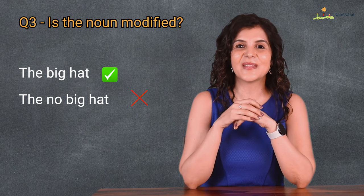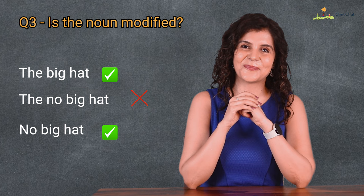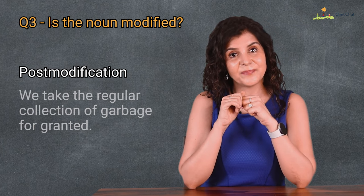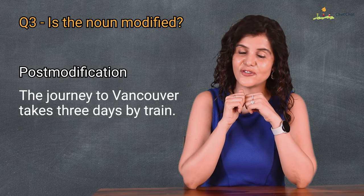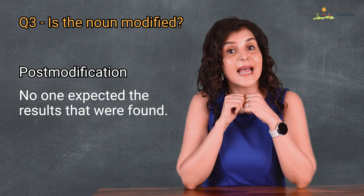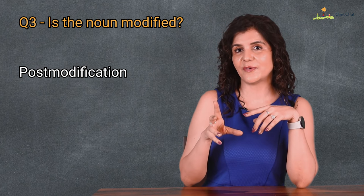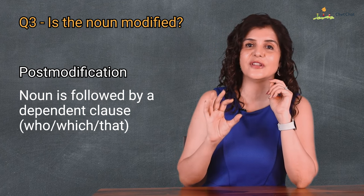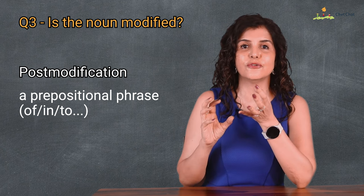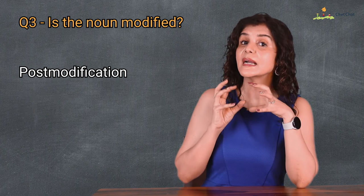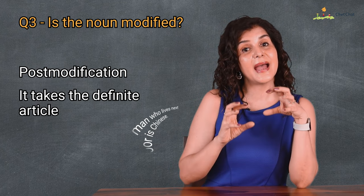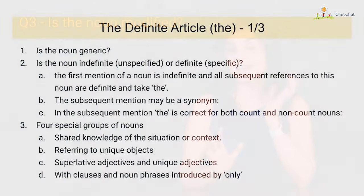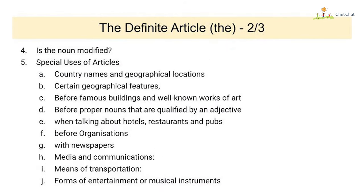For post-modification, look at these sentences: we take the regular collection of garbage for granted; the journey to Vancouver takes three days by train; no one expected the results that were found. When a noun is followed by a dependent clause — who, which, that — or a prepositional phrase — of, into — it becomes specific and takes the definite article. The man who lives next door is Chinese. So, the three questions are: is the noun generic? Is the noun specific? Is the noun modified?